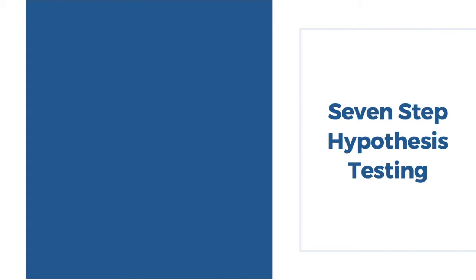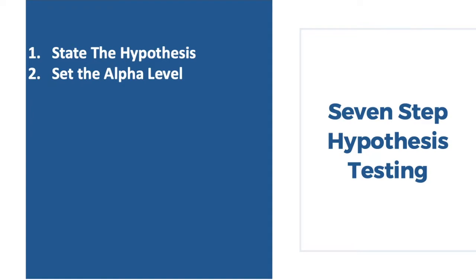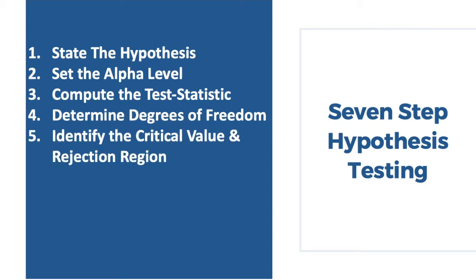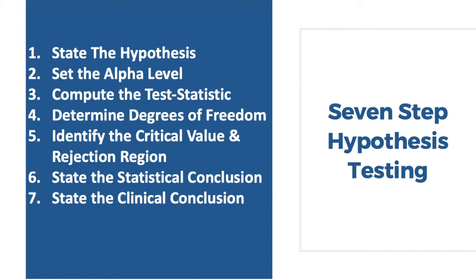In order to utilize the independent samples t-test, we need to use our seven-step hypothesis testing format. Here are the seven steps: first, state the hypothesis; second, set the alpha level; third, compute the test statistic; fourth, determine the degrees of freedom; fifth, identify the critical value and the rejection region; sixth, state the statistical conclusion; and seventh, state the clinical conclusion.